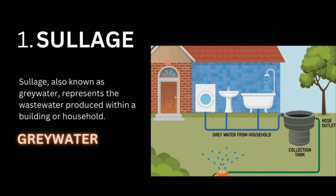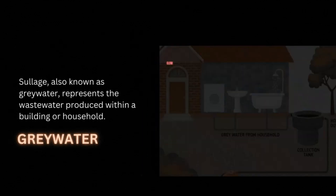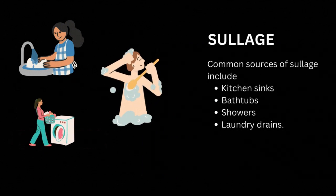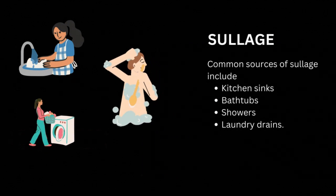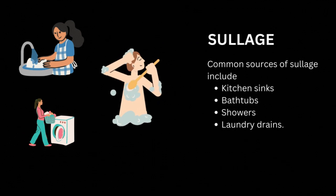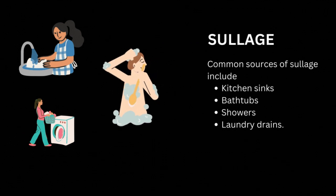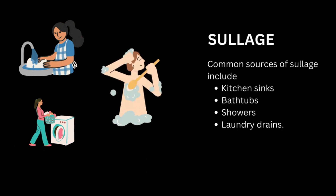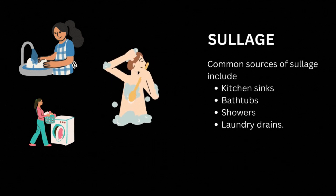Unlike blackwater, which comes from toilets and contains human waste, solage is relatively less contaminated but still requires appropriate treatment before reuse or disposal. Common sources of solage include kitchen sinks, bathtubs, showers, and laundry drains.